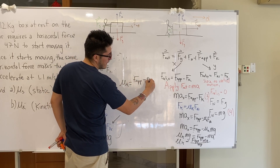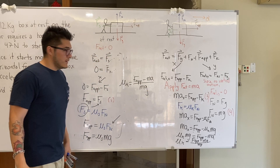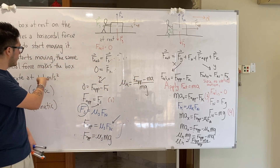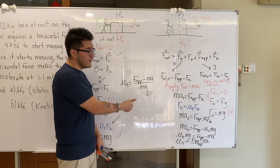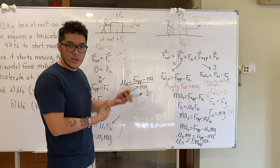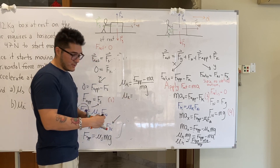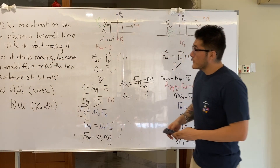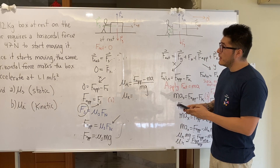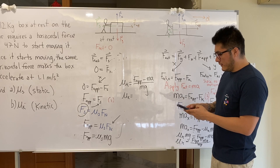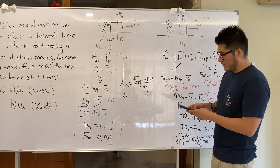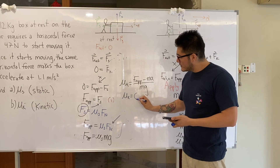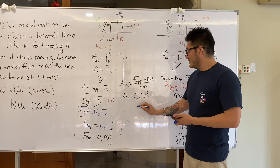We have all the values: applied force is 47 newtons, acceleration is 1.1 m/s², mass is 12 kilograms, and g is 9.8. Plugging in: mu_k equals (47 minus 12 times 1.1) divided by (12 times 9.8), which gives approximately 0.29, or about 0.3.